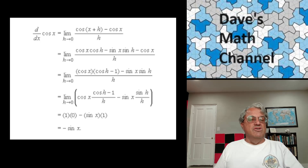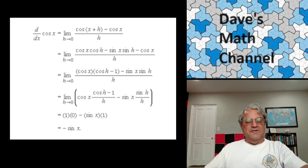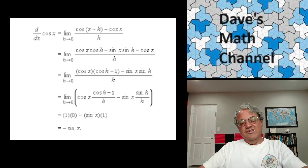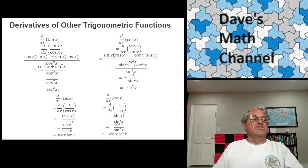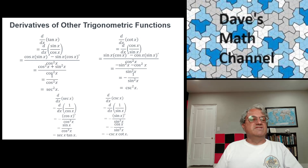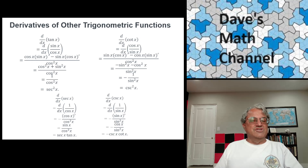These formulas are easy to remember: derivative of sine is cosine, and derivative of cosine is negative sine. Pretty nice formulas. Now for the other four — like I said, we don't have to worry about limits anymore. Tangent and cotangent are basically the same derivation, as are secant and cosecant — just like sine and cosine. There's this interesting duality between trig functions and their co-functions.